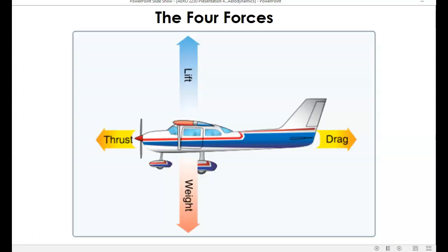The four forces that act on the airplane in flight are lift, weight, thrust, and drag. It's important to remember that lift opposes weight, and thrust opposes drag. When all four forces are equal or in equilibrium, then the airplane is in straight and level unaccelerated flight.